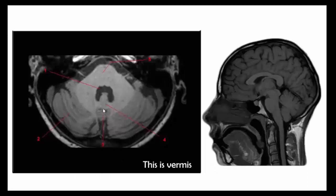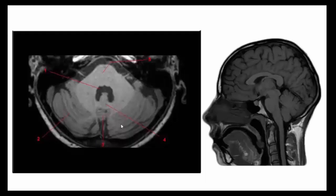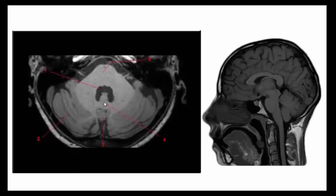This is the vermis. The vermis is the unpaired median portion of the cerebellum that connects the two cerebellar hemispheres. This is the nodulus. The nodulus is a separate lobe of the vermis that contains only one lobule.